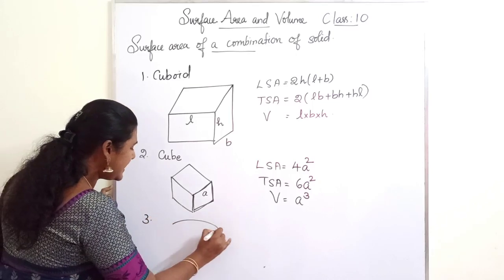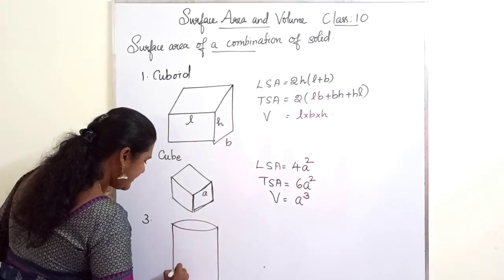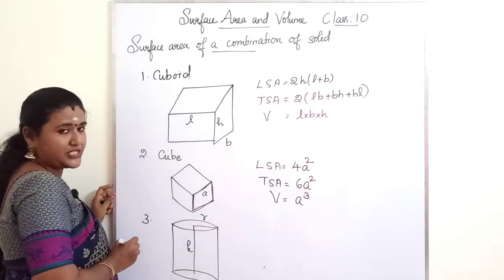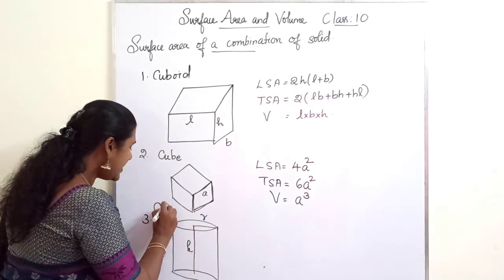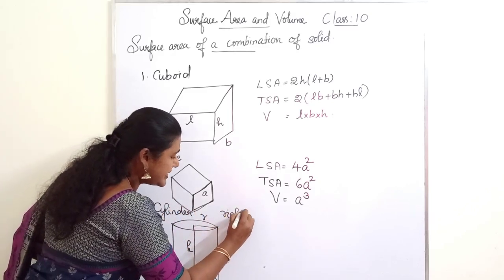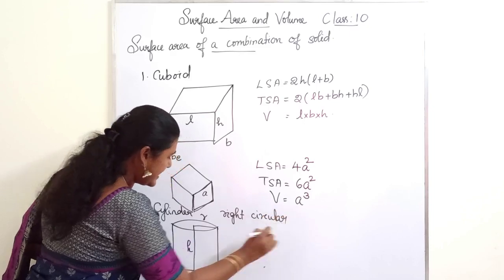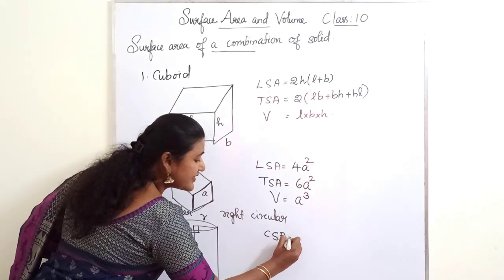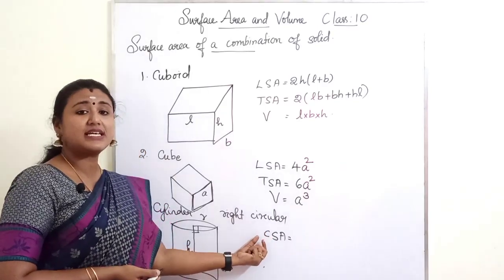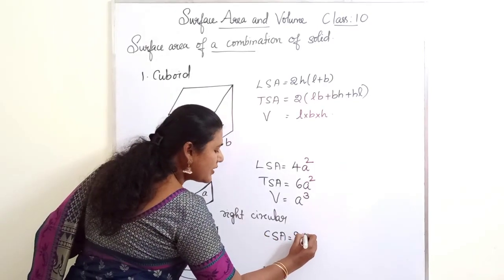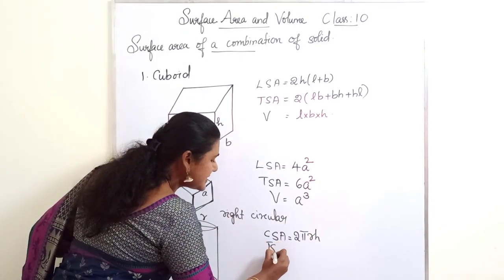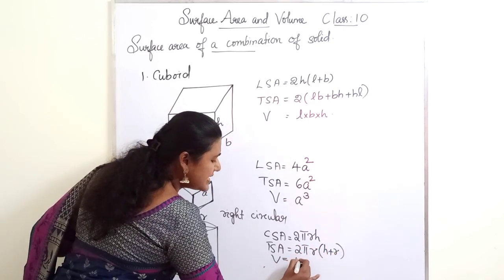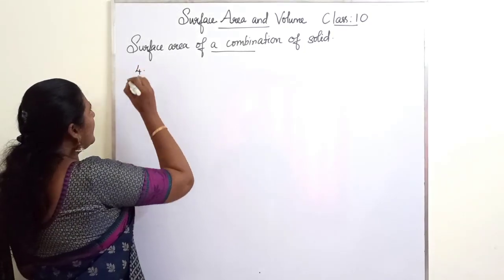The third shape is cylinder. If the radius of the cylinder is R and the height is H, we call this a right circular cylinder because the radius is perpendicular to the height. For such a solid, we use curved surface area (CSA) instead of lateral surface area. The formula for CSA is 2πRH, the TSA formula is 2πR(H plus R), and the volume formula is πR²H.